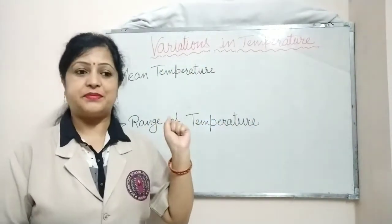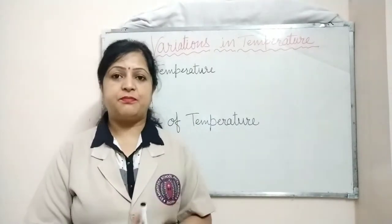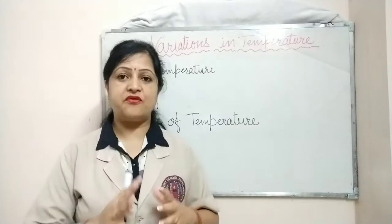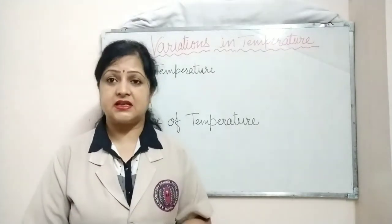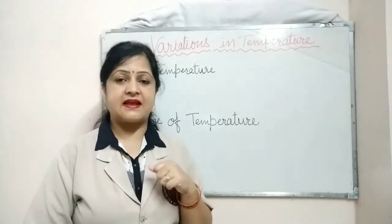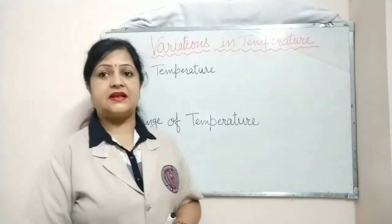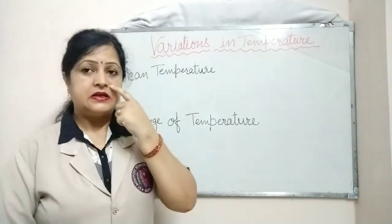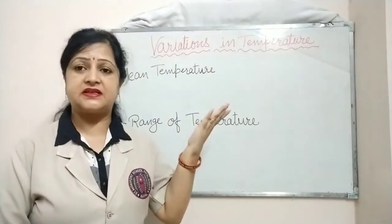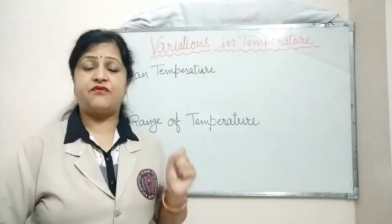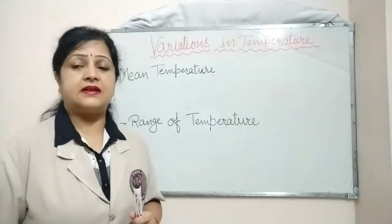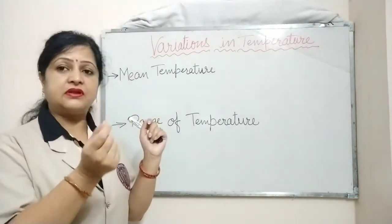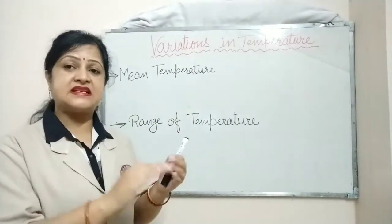We will discuss about variations in temperature. The temperature of a particular place will never remain constant — it varies with the time of day and with the time of year. The cause of this variation is the inclination of the sun's rays and the duration of sunlight. Now we are going to calculate the mean temperature of a place for one day. The average temperature of a place for a particular day is called the mean temperature of the place. To calculate the mean temperature, we should first know the maximum and minimum temperature of that place for that particular day.